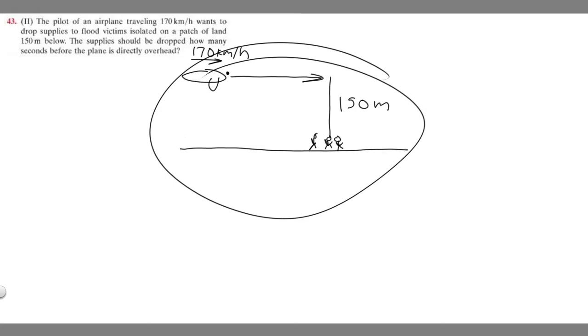So I drew a diagram of what's going on here. We have this plane traveling 175 kilometers per hour, and below it 150 meters are the victims. We're trying to find out how much time we should drop it before we go over the victims to ensure that it travels 150 meters and perfectly lands on them.